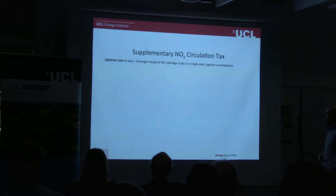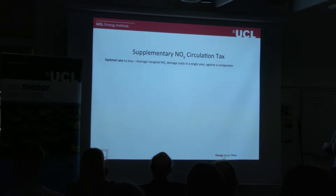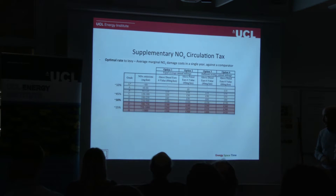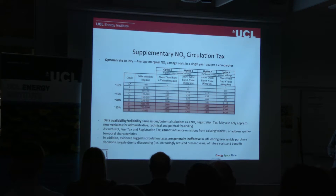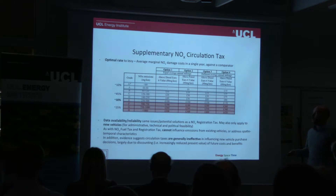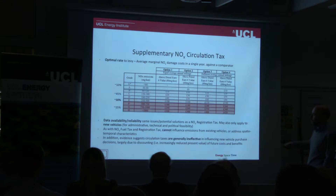The third option is the use of a supplementary NOx circulation tax — essentially a tax paid annually for ownership of a car. The optimal rate would be the average marginal damage cost in a single year against the comparator. The value is much lower than for a registration tax. The same issues of data availability apply and the same solutions can be used. However, circulation taxes are not as effective as registration taxes — people don't consider the value of a £100 tax in five years' time in the same way as a £100 tax paid immediately.